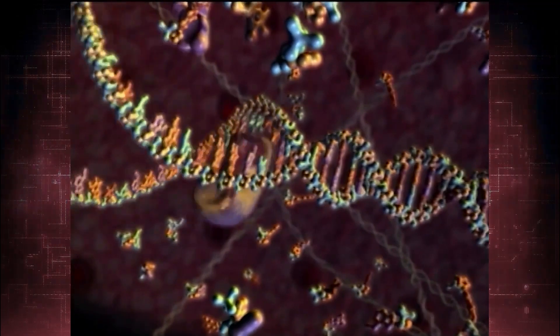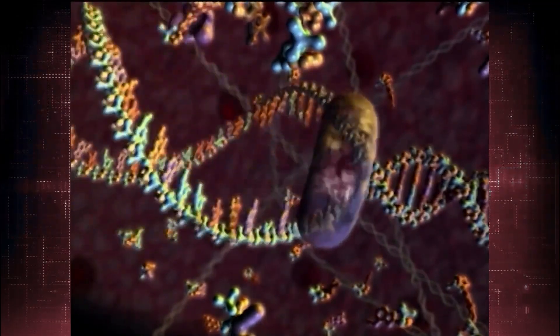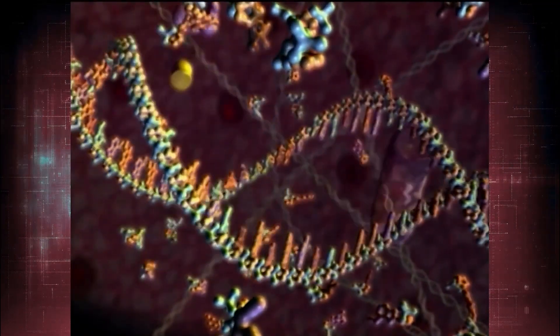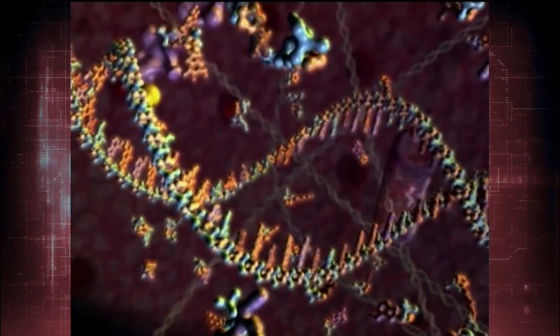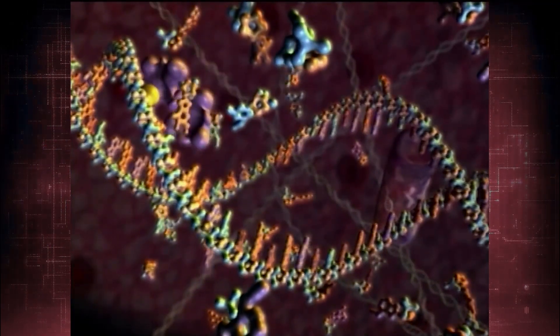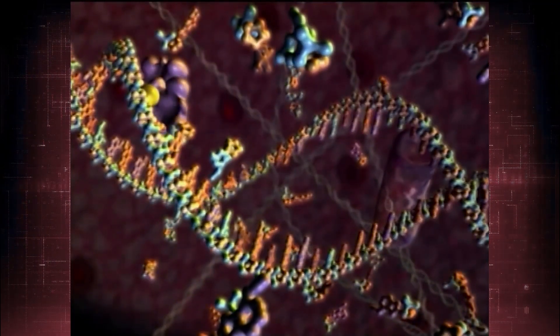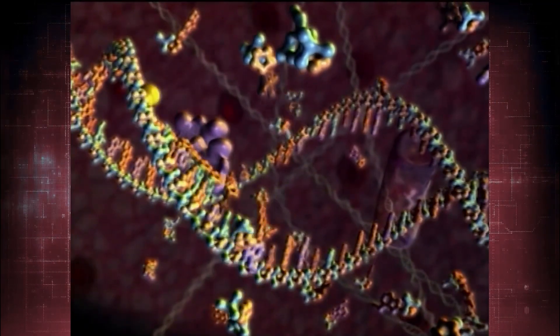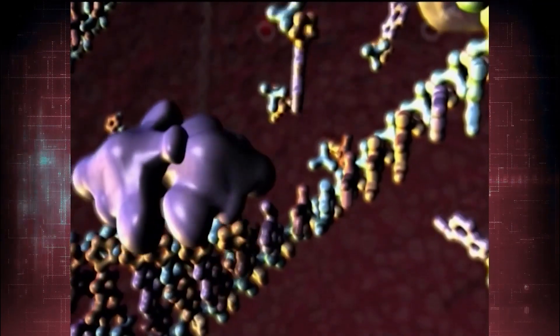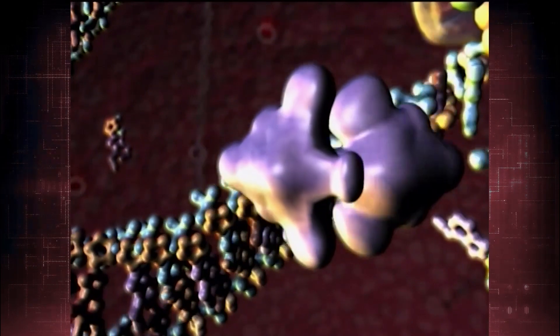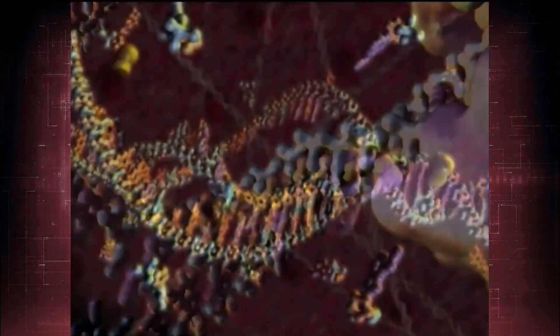In a process known as transcription, a molecular machine first unwinds a section of the DNA helix to expose the genetic instructions needed to assemble a specific protein molecule. Another machine then copies these instructions to form a molecule known as messenger RNA.